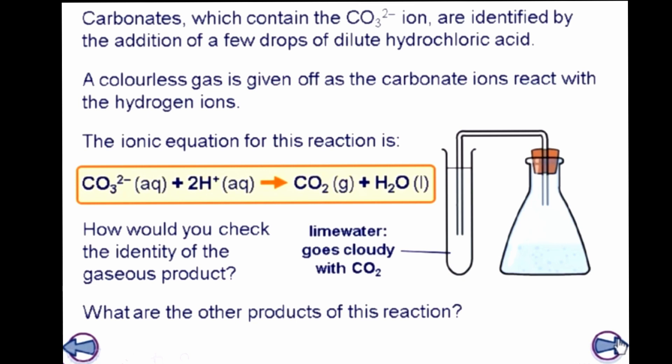When you have carbonate as a negative ion in a compound, it will always give out carbon dioxide gas — keep that in mind. You already know the test for carbon dioxide gas. When you add dilute hydrochloric acid, you observe a colorless gas. Other substances can also give colorless gas, but carbon dioxide does not give a specific smell. There is no pungent smell, which is an indication that it could be carbon dioxide.